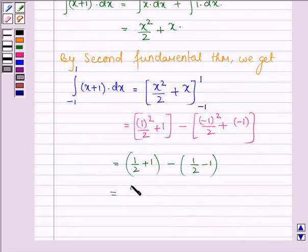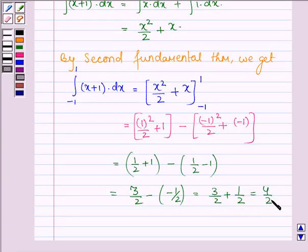This is equal to 3 by 2 minus minus half, which is equal to 3 by 2 plus 1 by 2, which equals 4 by 2, and on further simplifying we get 2.